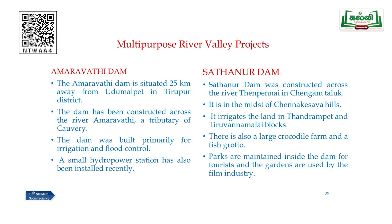The Amaravadi Dam is situated 25 kilometers from Udumalpet in Tirupur district, constructed across the river Amaravadi, a tributary of Kaveri. The dam was built primarily for irrigation and flood control, and a small hydropower station has also been installed recently. The Sathanur Dam was constructed across the river Tenpennai in Chengam Taluk, in the midst of the Chennakesava hills. It irrigates land in Tiruvannamalai block and features a large crocodile farm, a fish grotto, parks, and is used as a tourist spot and by the film industry.